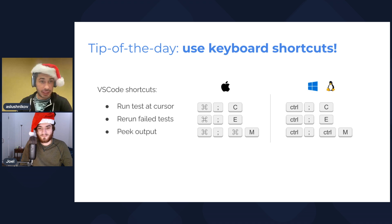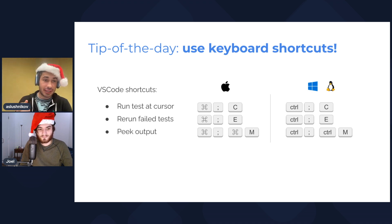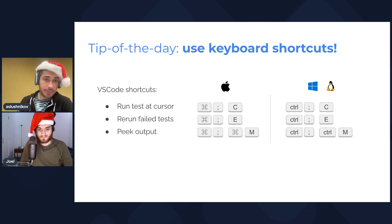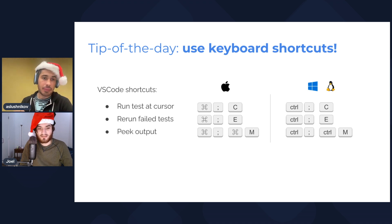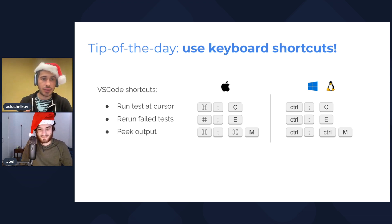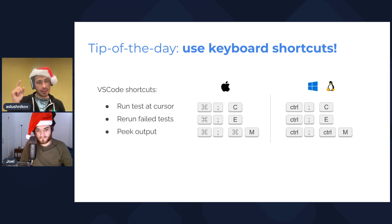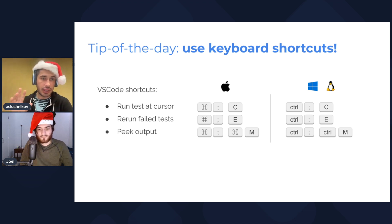Today's tip of the day is a productivity tip: use shortcuts and learn shortcuts in VS Code to be more productive. These are Playwright extension shortcuts. We find these three very handy: Run test at cursor, Run failed tests, and Peak output — which basically shows you the console logs you have in your test.